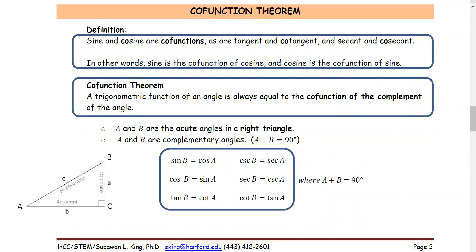Co-function theorem. We look at two things. Number one, the two angles that are complementary of each other. For example, a and b are complementary angles if a plus b equals 90 degrees. And also the name of the functions: sine and cosine are co-functions — you just add 'co' as a prefix to sine, so cosine.